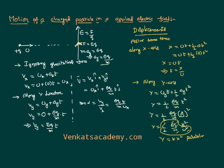That means this charged particle moving in the horizontal direction, when an electric field is applied vertically, will not continue its path horizontally. Rather, it will deviate vertically and take a parabolic path. This is how we understand the motion of a charged particle under an electric field. Thank you, we will continue this discussion further.